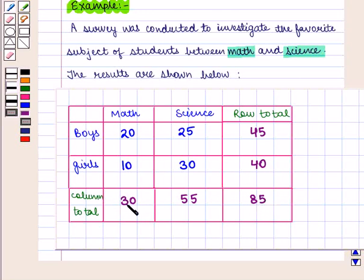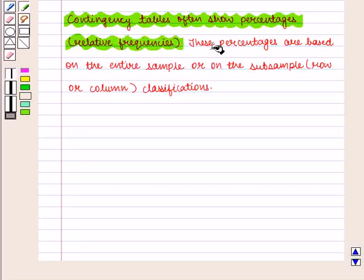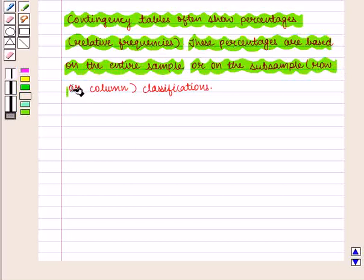Here we should note that contingency tables often show percentages, that is related frequencies. These percentages are based on the entire sample or on the subsample, that is row or column classifications.